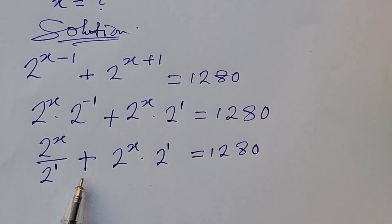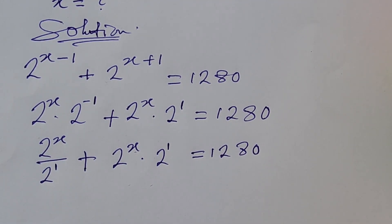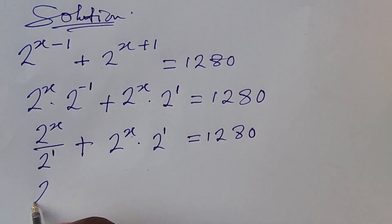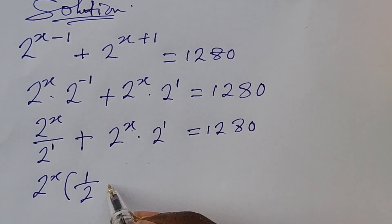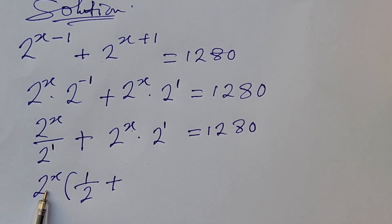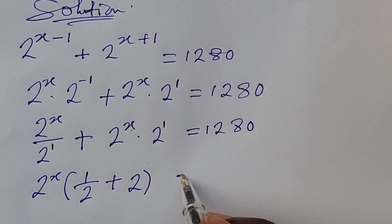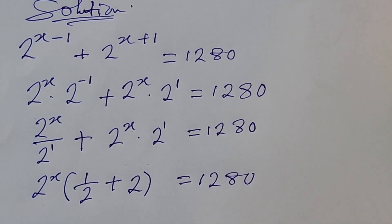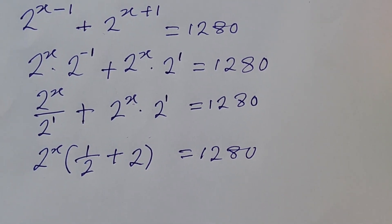Looking at the left hand side, we have 2 to the power of x in both terms, so we can factor out 2 to the power of x. Doing that, we get 2 to the power of x times the bracket: 1 over 2 to the power of 1, plus 2 to the power of 1, which is 2, close bracket, equal to 1280.